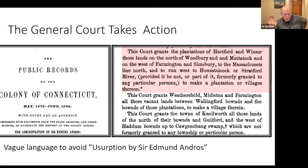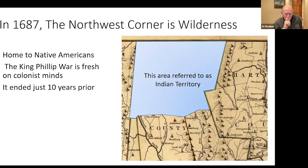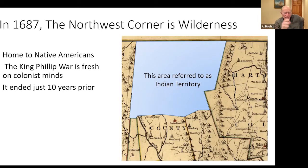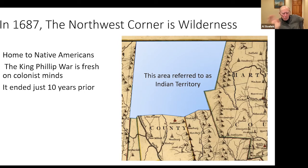Here we are in 1687, and this whole northwest corner is called the Manituck preserve. It's pretty much home to Native Americans — the King Philip's War had just ended 10 years prior, and most of the Indians had been forced back into this corner of Connecticut. The western side is really under the jurisdiction of the Six Nations — the Iroquois nations of New York — and the tribes there didn't really link to the southeastern tribes like the Mohegans, Nipmucs, and Quantics. So this is Indian territory.